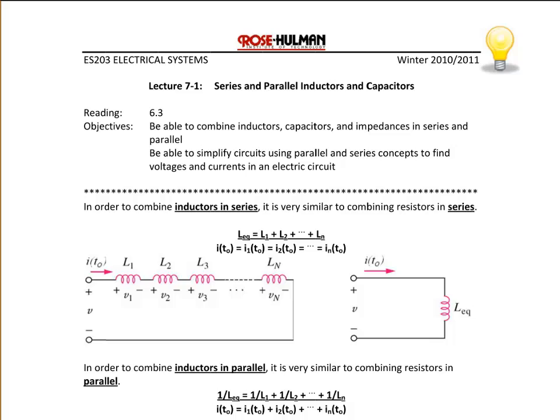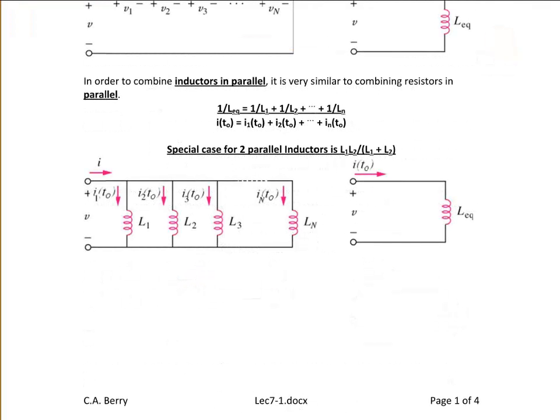The initial current through each inductor would have to be the same because they are in series. Note that for inductors in parallel, if you combine them, the equivalent inductance has an initial current equal to the sum of the individual initial currents for each of the inductors.